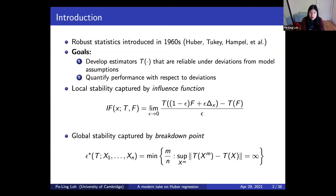The first notion of robustness is a local notion — the influence function. It tells you the rate of change of your estimator as you contaminate with a point mass in some direction. It's a function of x, the position at which you contaminate the distribution. You look at the behavior of your estimator when applied to an epsilon-contaminated mixture: one minus epsilon fraction from clean distribution f, and epsilon fraction from the contaminating point mass. An estimator is declared robust if the influence function is bounded in x.